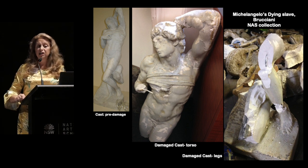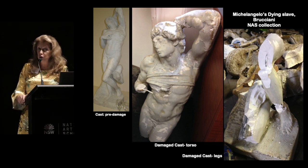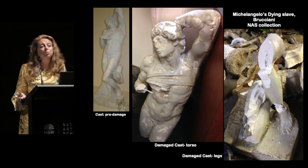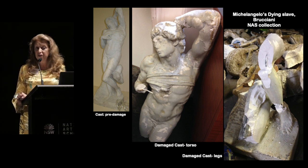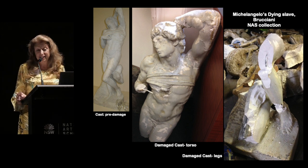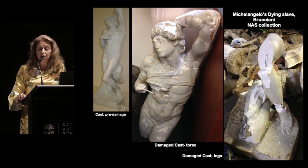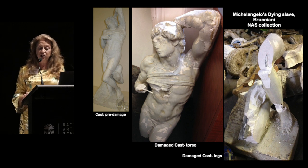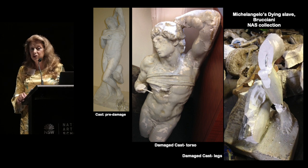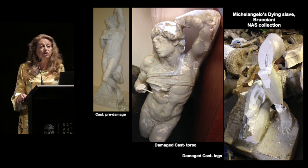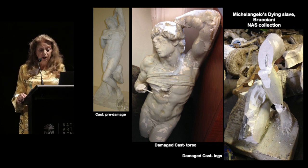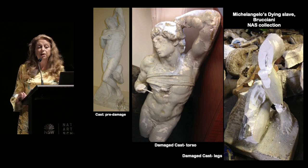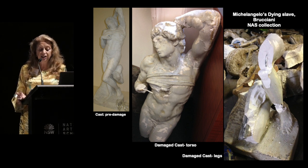Via this haptic connection and interaction between object and human, the art school has become the repository of a collection whose inherent value and significance lie not only in its historical and social context and aesthetic values, but also in the cast's function as a useful object in a working collection. The casts are used, sometimes abused, handled and sometimes even drawn upon. The plaster casts have certainly been marked by time and by the students who have left traces and scars and rough edges on the works.